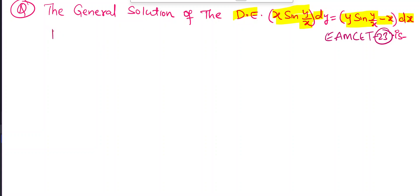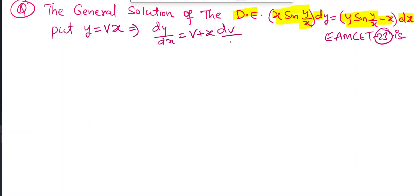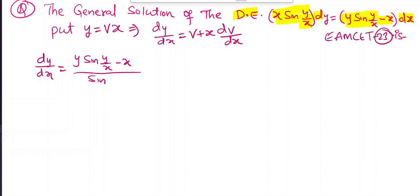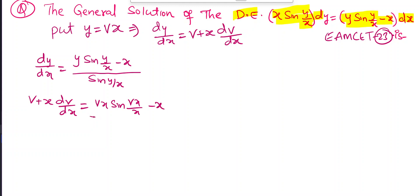Substitute y = vx, so dy/dx = v + x·dv/dx. Rewriting dy/dx from the equation: dy/dx = [y·sin(y/x) - x] / [x·sin(y/x)] = v·sin(v)/sin(v) - x/(x·sin v) = v - 1/sin v. Substituting: v + x·dv/dx = v - 1/sin v.